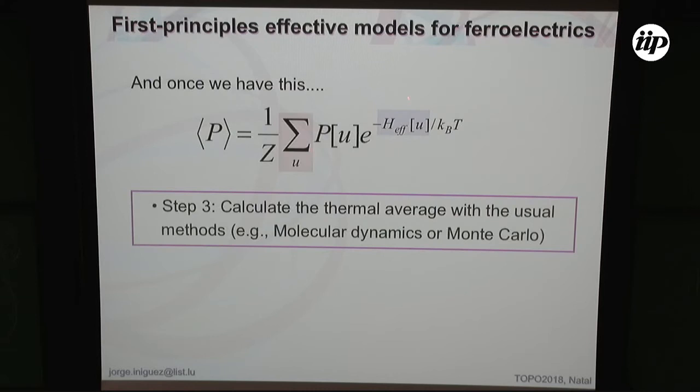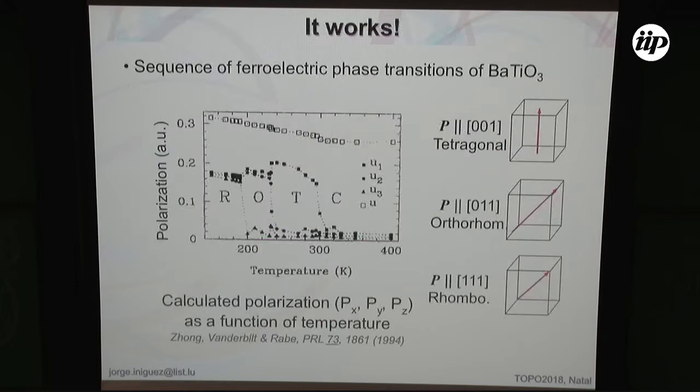Couplings between elasticity and dipoles are very important to account for things like electrostriction or piezoelectricity in the low-symmetry phase. You put all that together, compute the parameters from first principles with a few heavy but not very many calculations, and you have all you need to run the sum. You can evaluate energies quickly and sum over a relatively small space of configurations using molecular dynamics or Monte Carlo. This is what these researchers did in 1994. The first perovskite oxide considered in this approach was barium titanate.